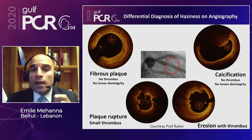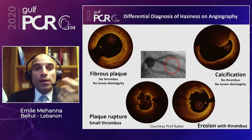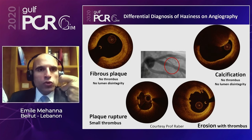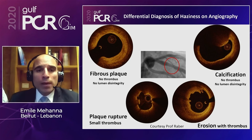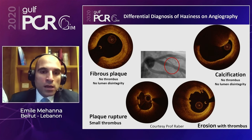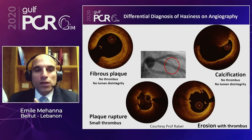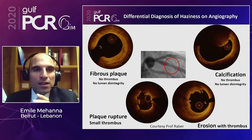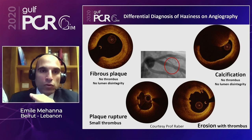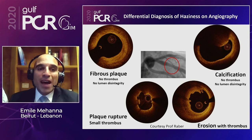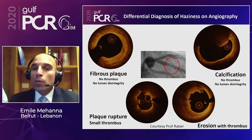A hazy lesion on angio can be either a very stable fibrous plaque with no thrombus and no lumen disintegrity, or a calcified nodule — which, although a feature of vulnerability, without thrombus or floating material is still stable plaque. This is clearly different from plaque rupture or plaque erosion. In erosion, you can see white thrombus stacked there, clearly affecting the lumen. The lower two OCT pictures represent active ACS plaques; the upper two represent stable angina plaques without active features.